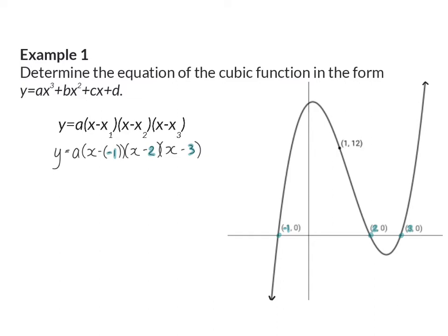To determine the value of a we need to realize that an extra coordinate was given and we can use the x and y value to substitute into the equation. So y will become 12 and each one of the x's will be changed to 1. When we simplify we will have a times 2 times minus 1 times minus 2 which will give us 4a equals 12 and that means that a is 3.